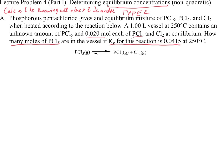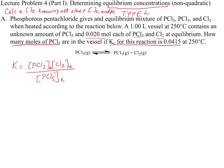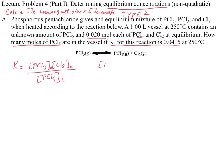The first step in any of these questions, whether Type 1 or Type 2, is to write down your K equation. The K equation in this case is K equals the concentration of PCl3 times the concentration of Cl2 divided by the concentration of PCl5, all at equilibrium. We can start to extract information from the question for PCl3 and Cl2 at equilibrium.